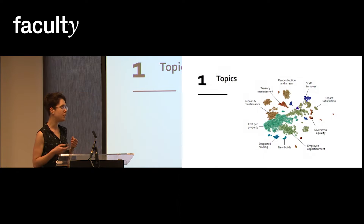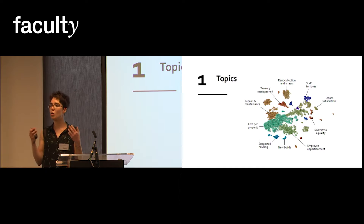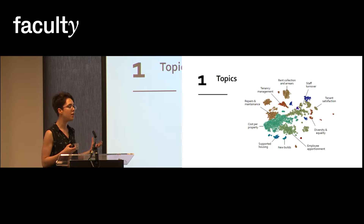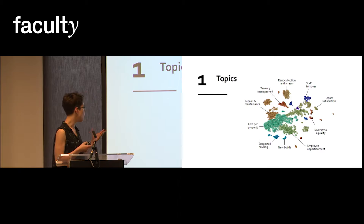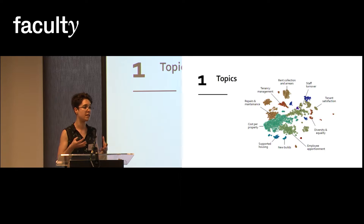With this data, I began by creating a model that identifies the main topics in these conversations — what are people talking about? This model highlights topics like staff turnover: how many employees leave and are replaced by new employees in these housing associations. Or repairs and maintenance: how much work is needed to keep these buildings in good condition.